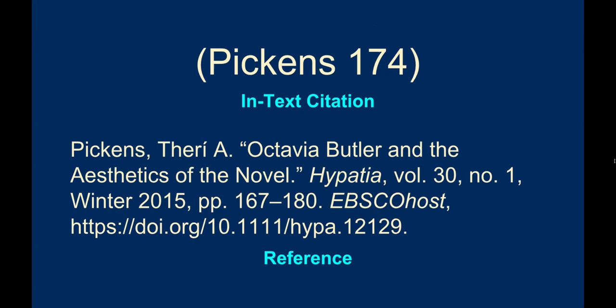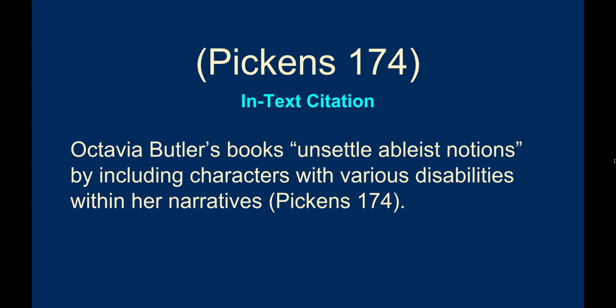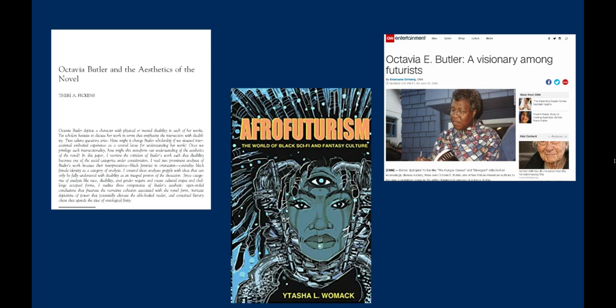Most citations have two parts: the in-text citation and the reference. The first part is an in-text citation, which shows readers exactly where you have used information from outside sources in your paper. Outside sources can include websites, scholarly journal articles, and books, among others.